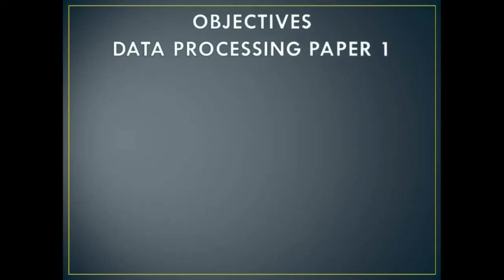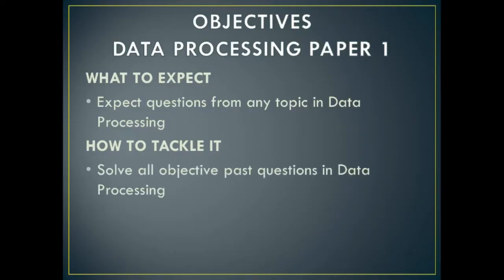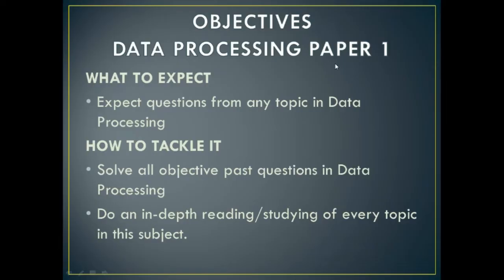I'm going to start with the objective questions — data processing paper one. In data processing paper one, you should expect questions from any topic in data processing. To tackle this, you need to solve all past questions in data processing — make sure you go over all past questions and solve them correctly. Secondly, you need to do an in-depth reading or studying of every topic in this subject in order to be well prepared to attempt any question in paper one, which is the objective questions.